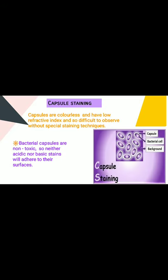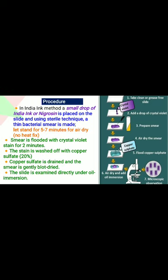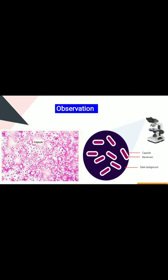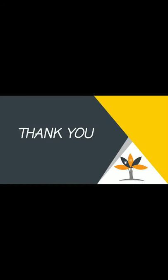Capsules are colorless, have a low refractive index, and are difficult to observe without special staining techniques. Bacterial capsules are non-ionic, so neither acidic nor basic stains will adhere to their surfaces. In the capsule staining procedure using the Indian ink method: a small drop of Indian ink (also known as nigrosin) is placed on the slide, a thin bacterial smear is made using sterile technique, and it is allowed to air dry for 5 to 7 minutes — no heat fixing is done. The smear is flooded with crystal violet stain for two minutes, then the stain is washed off with copper sulfate, which is drained, and the smear is gently blot dried. The slide is examined under oil immersion. Observation shows encapsulated cells indicated by a clear halo surrounding the cells.